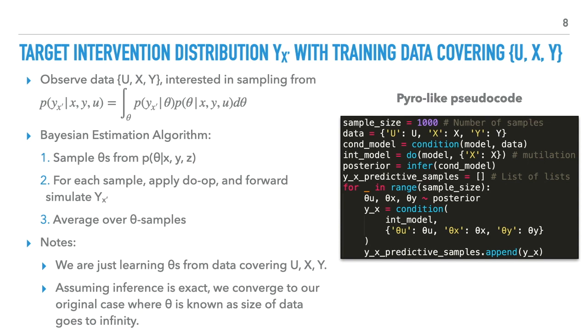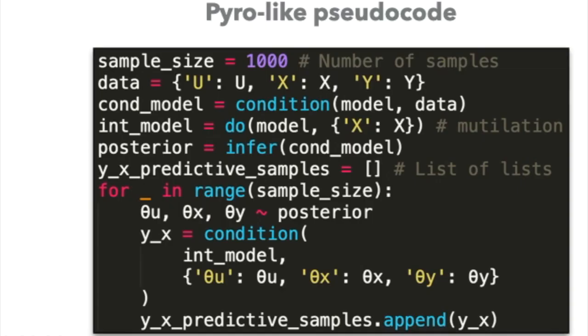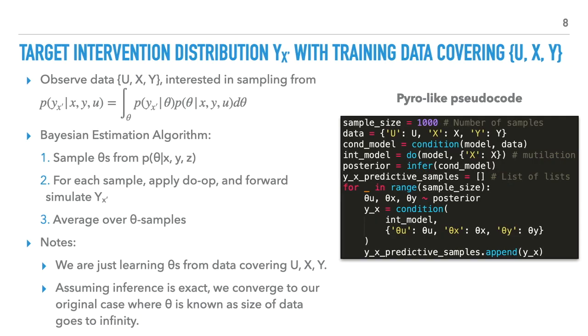So, given unknown theta and data containing observations on U, X, and Y, we'll do proper Bayesian inference of Y sub x prime. We'll first get the posterior distribution on theta, then we'll sample from the predictive distribution of Y sub x prime. We first learn the posterior distribution of theta given X, Y, and U on the full graph, then generate Y from the transformed model as we did before. Again, this is how this algorithm might look in Pyro-like pseudocode. The intuition is that with exact inference, if the data is large enough, we just converge to the original case where thetas were known.